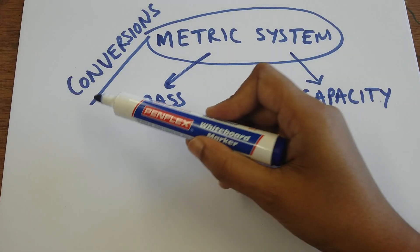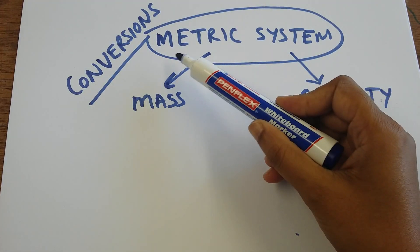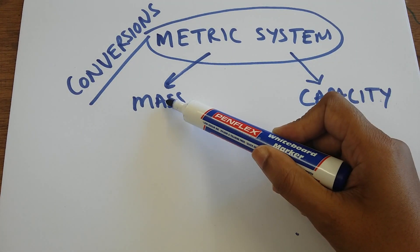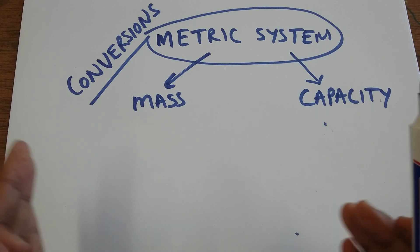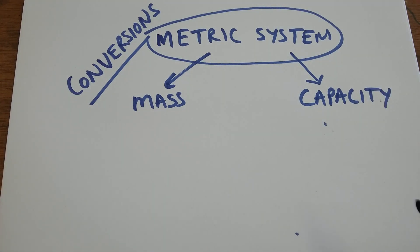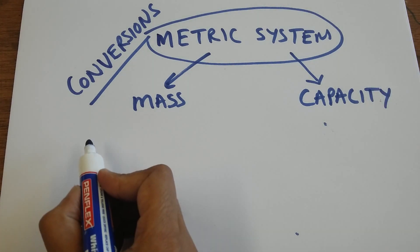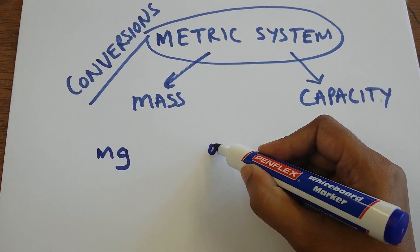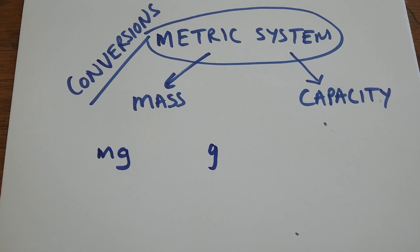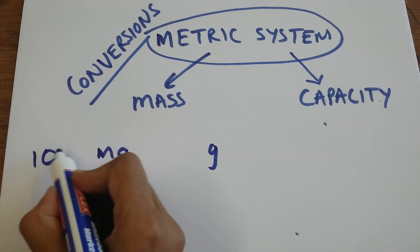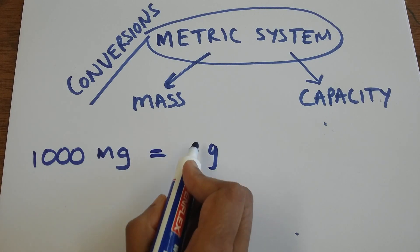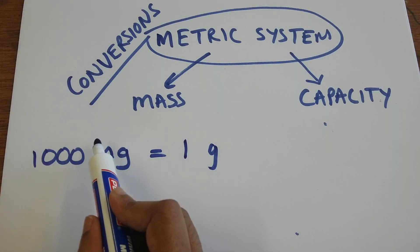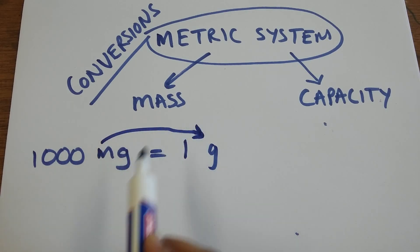We will continue with conversions, focusing on the metric system — we're going to look at mass and capacity. For mass, let's look at milligrams and grams. We should know that one thousand milligrams is equivalent to one gram, which means when I convert from milligrams into grams...